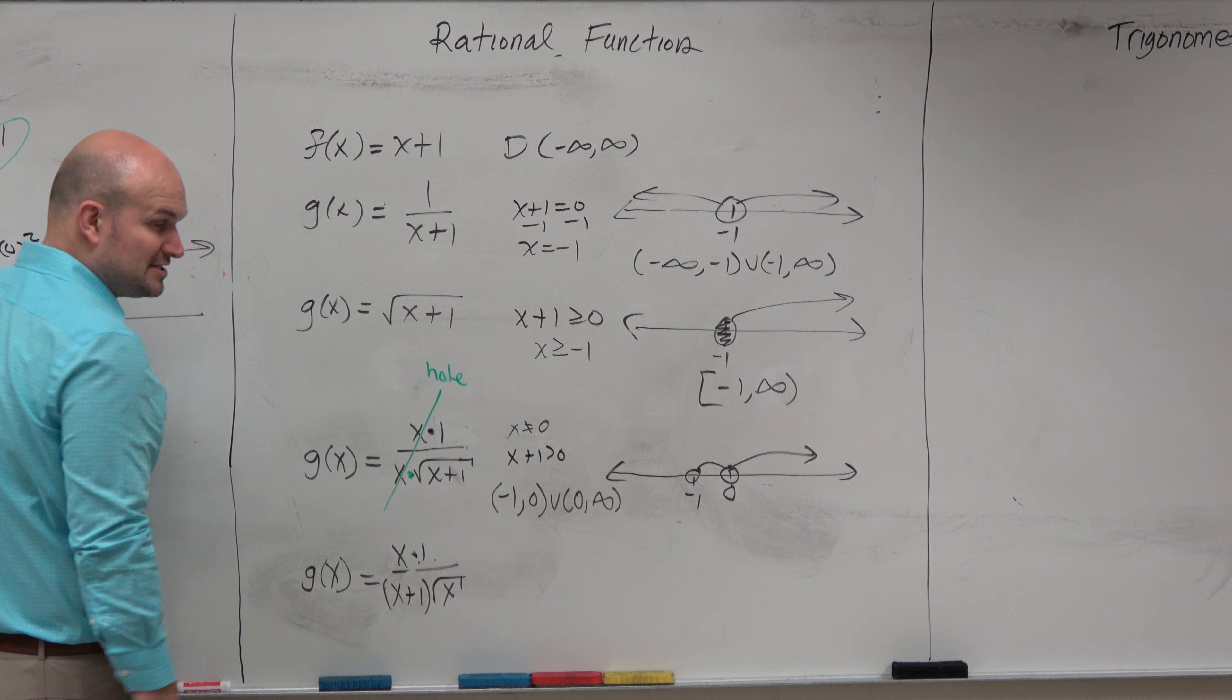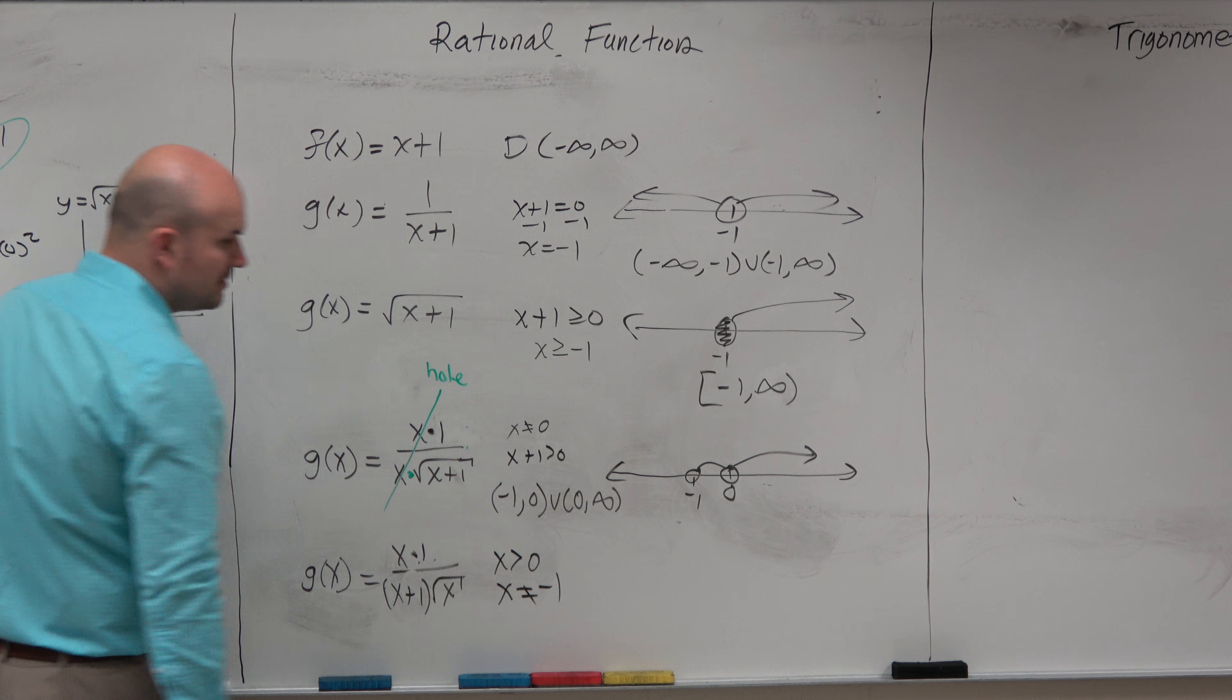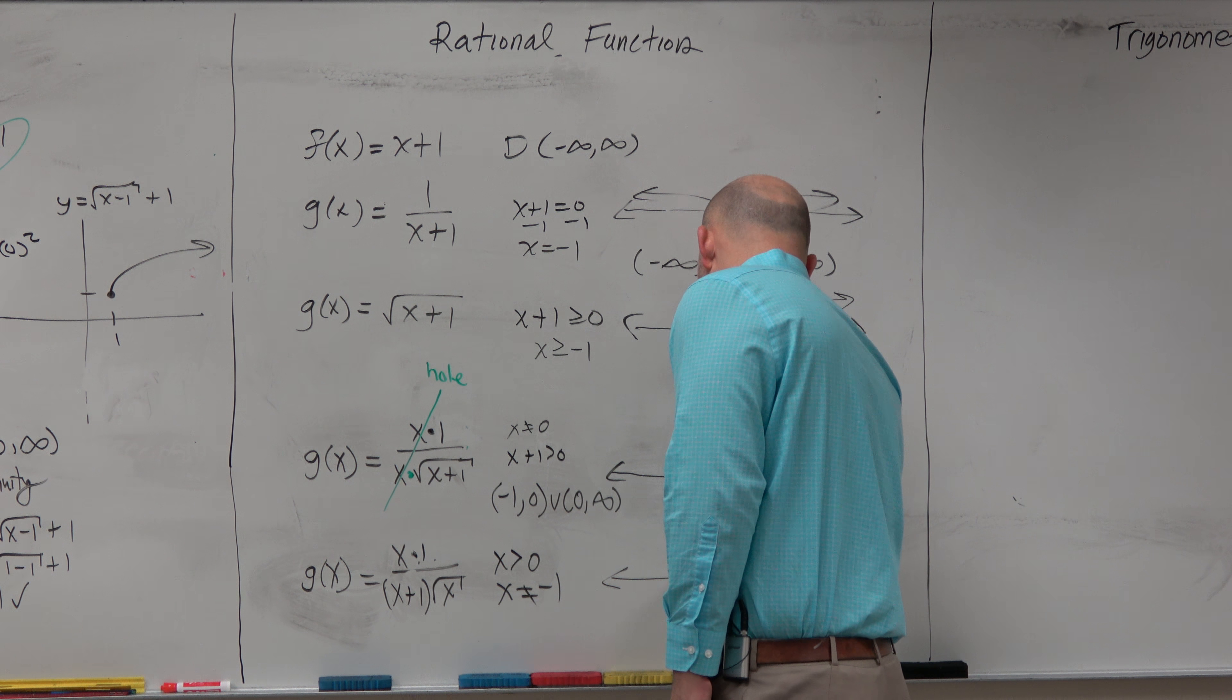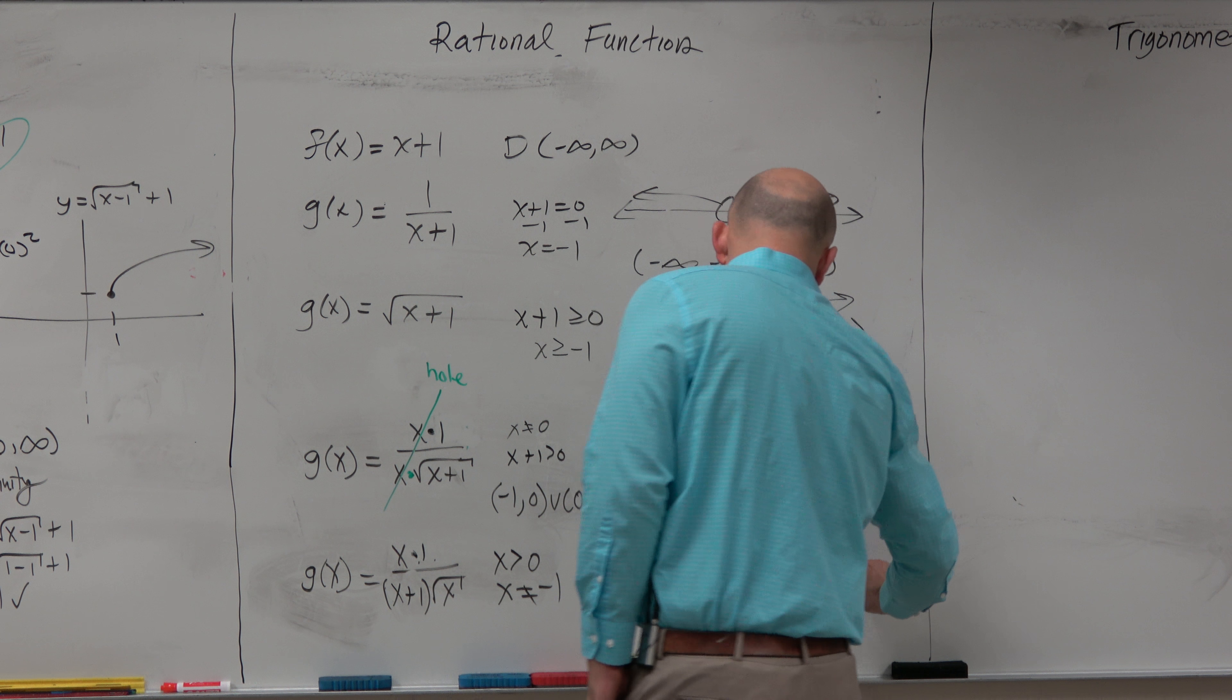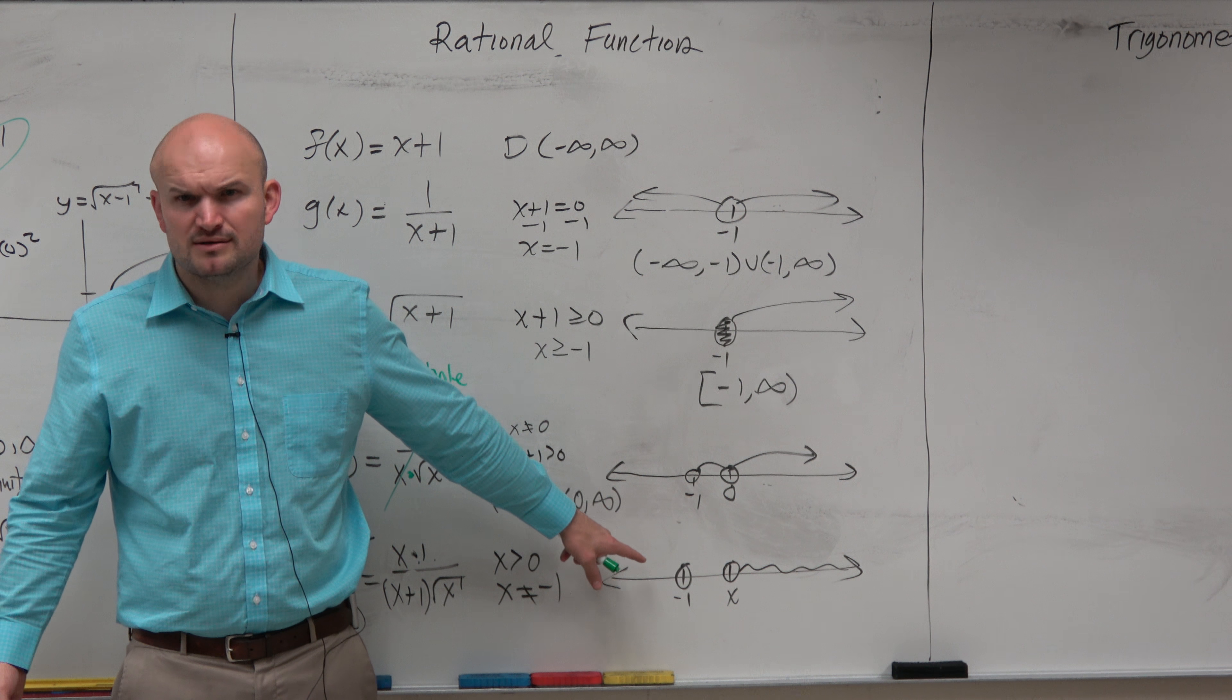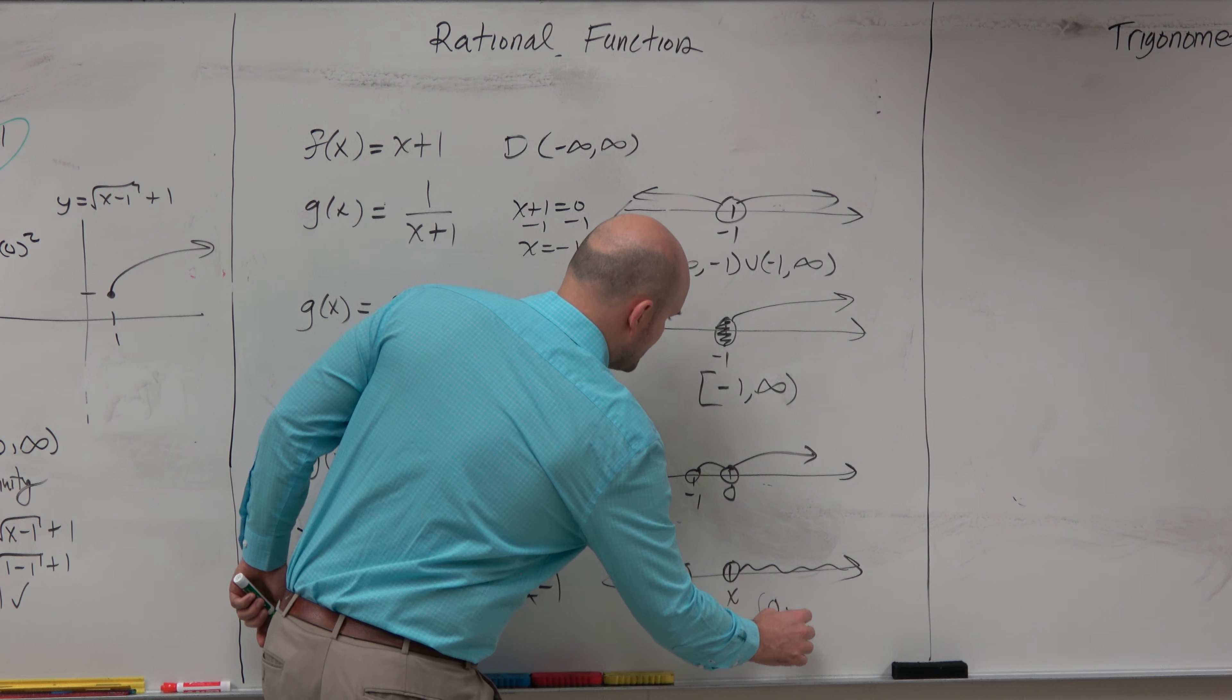So here, I just have x under the radical. So therefore, x has to be greater than 0, and x cannot equal negative 1. Now the cool thing is, when we look at the number line here, x cannot equal negative 1, and x has to be greater than 0. So does it really matter that x cannot equal negative 1? Do we really care? No. Because our domain is only going to be for values that are greater than 0, which would be from 0 to infinity.